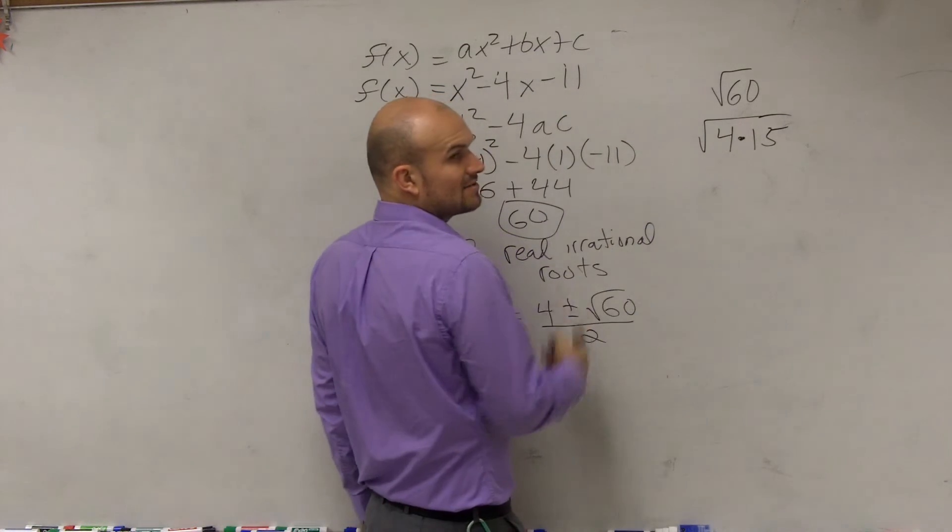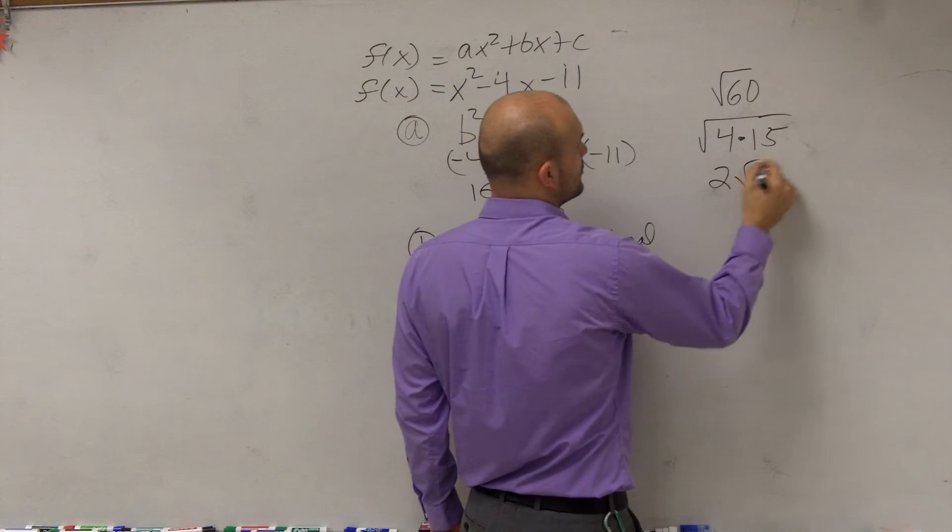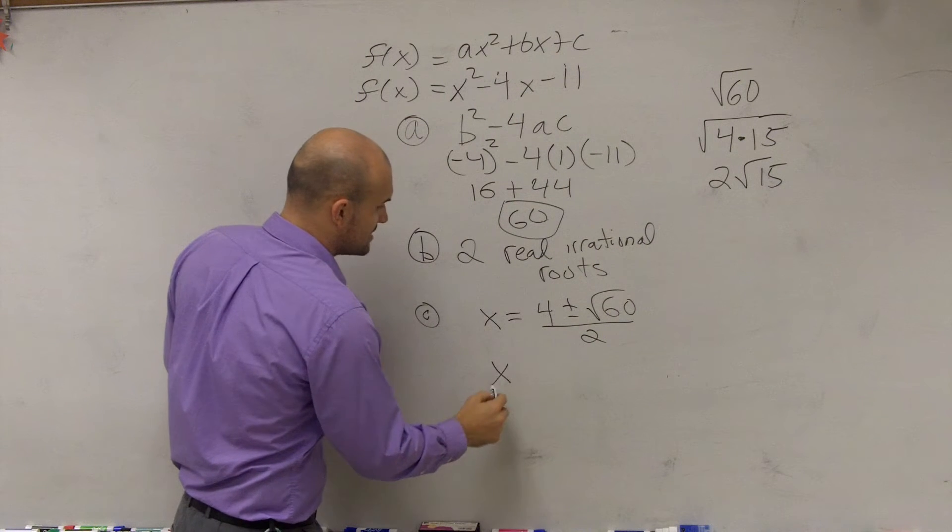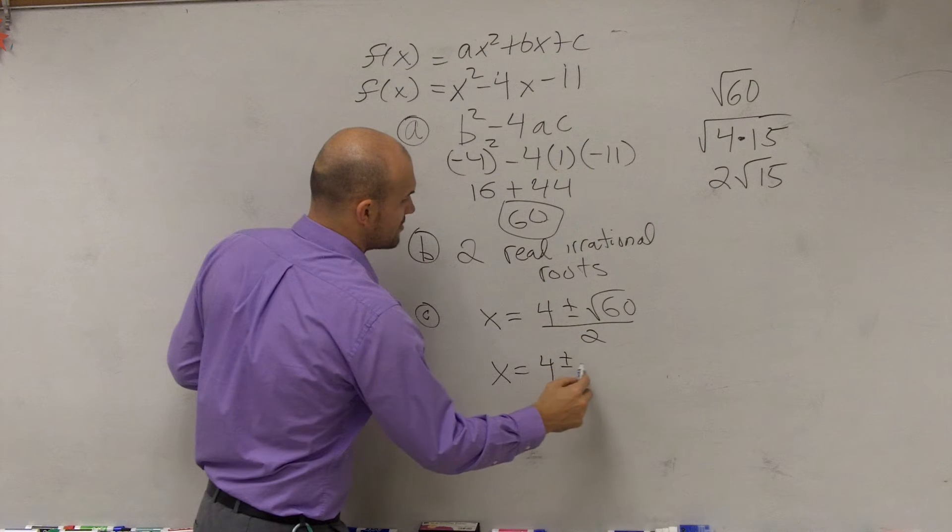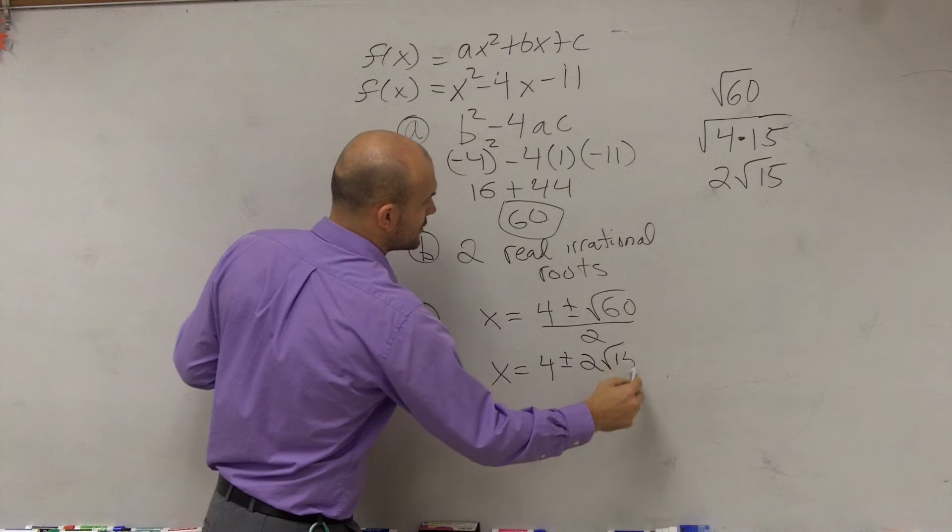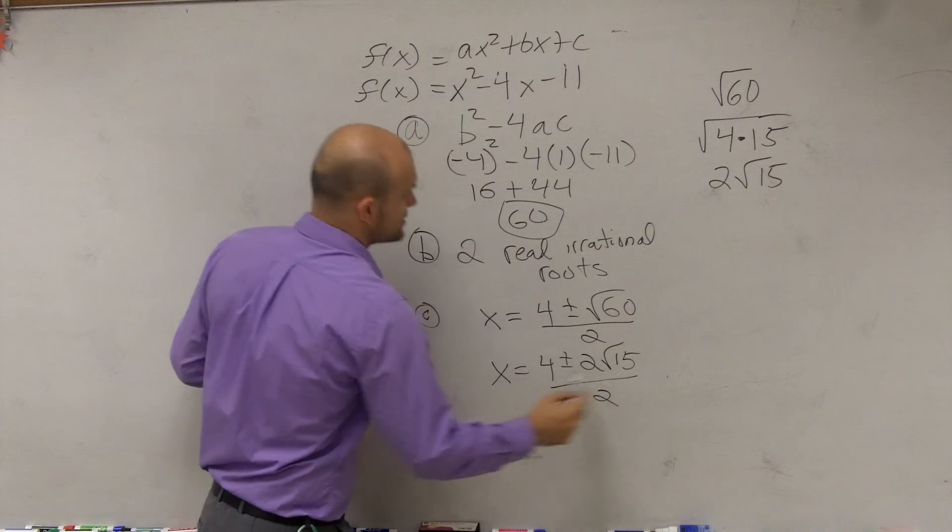Therefore, I can now take the square root of 4, which is 2, radical 15. Therefore, I can simplify this to 4 plus or minus 2 square root of 15 divided by 2.